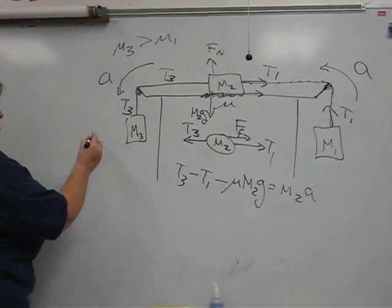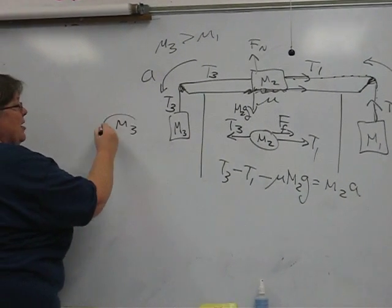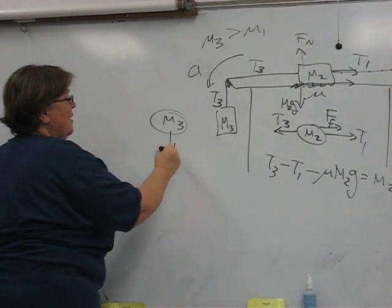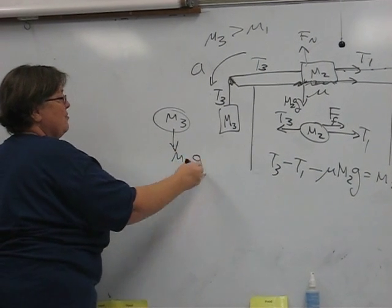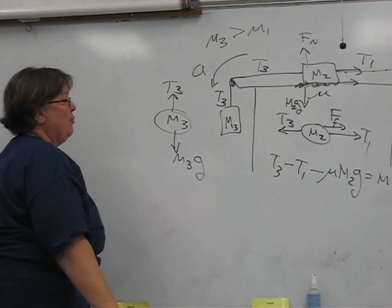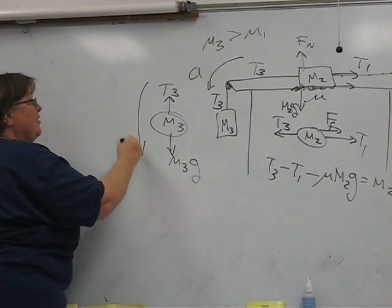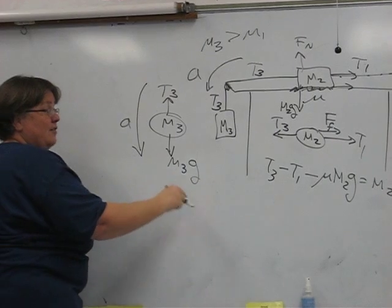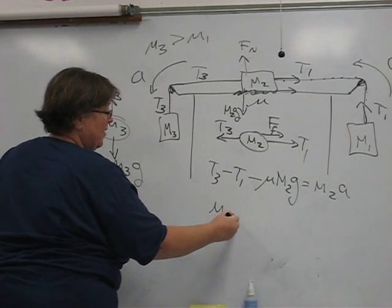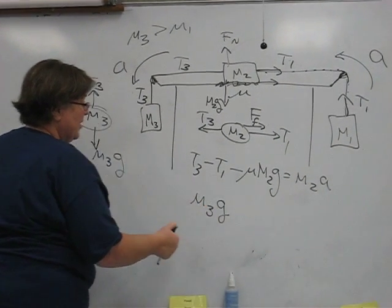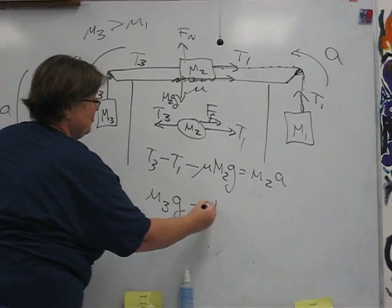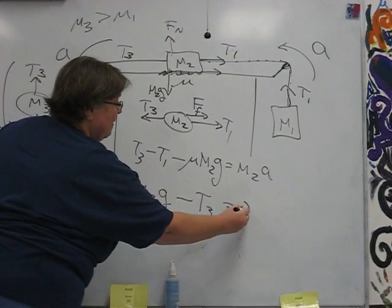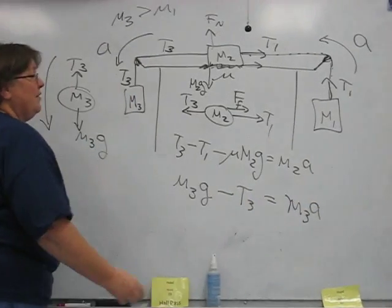In the case of M3, our free body diagram is simply going to be the weight of M3 and this tensional force pulling back. This system is accelerating in the direction of M3's weight, and that's why it gets the positive and T3 gets the negative.